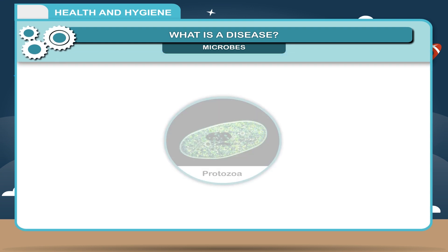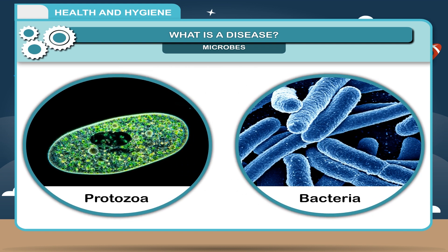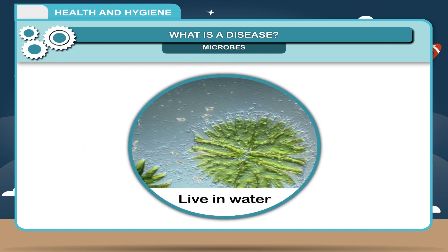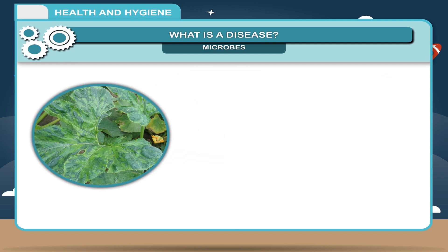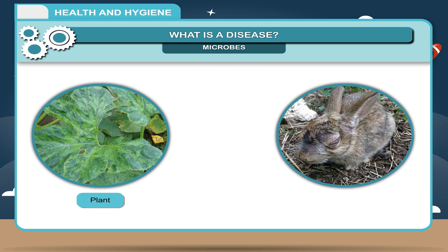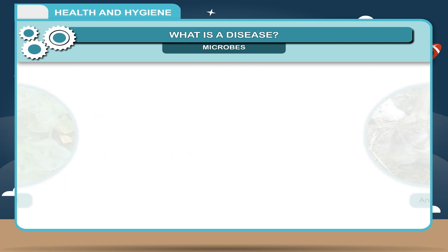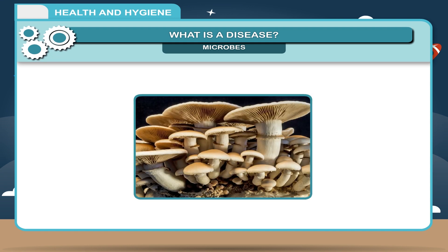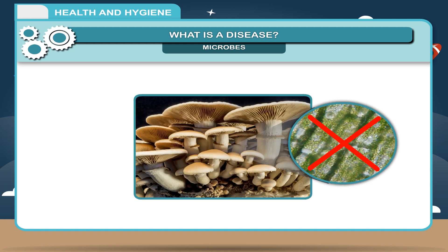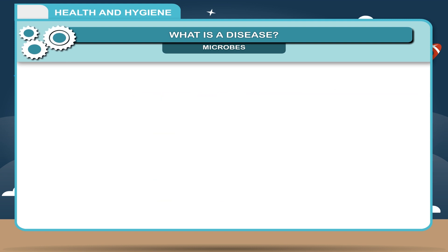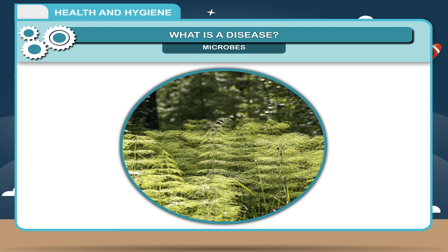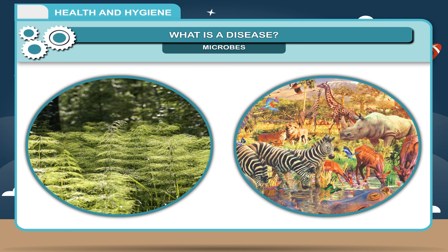Protozoa are bigger than bacteria. Most of them live in water. Others live as parasites in the bodies of plants and animals. Fungi are plants which lack chlorophyll; hence they cannot make their own food. They live on decaying matter as well as living plants and animals.